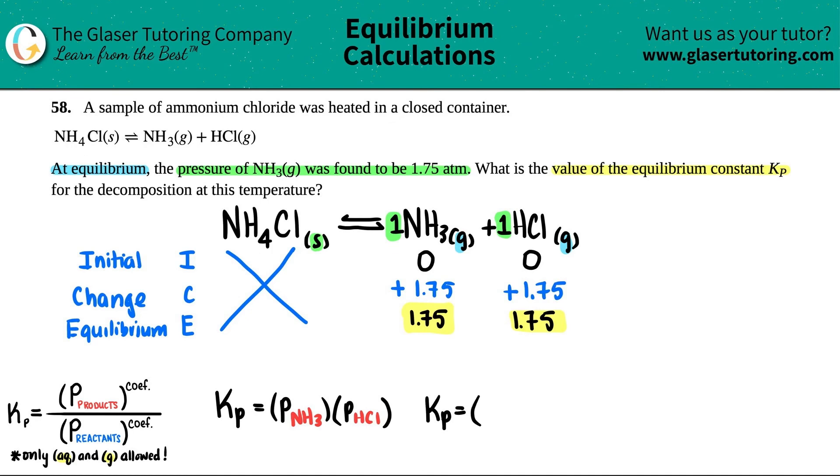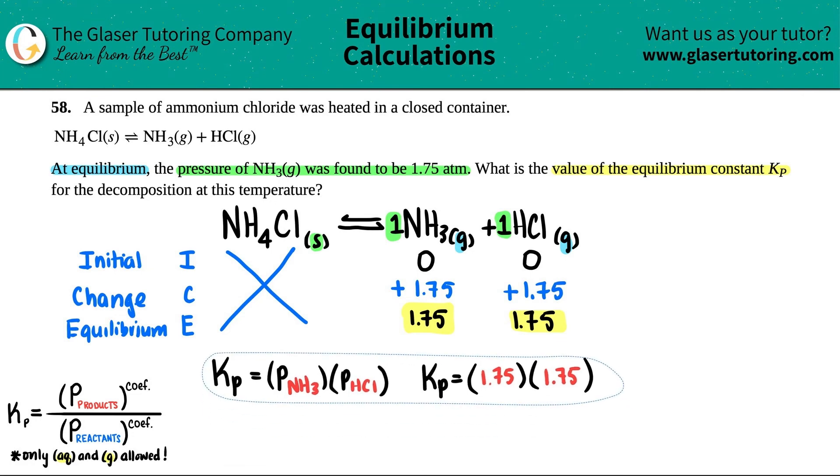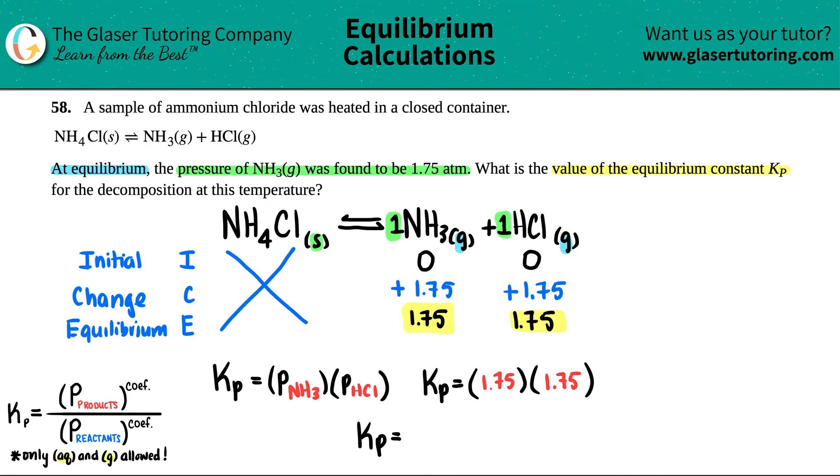Kp equals 1.75 times 1.75, or 1.75 squared. I got three sig figs, so if we really care about sig figs, which nobody cares, but just to go back, you should have three sig figs: 3.06. That is your final answer. Kp and Kc values are unitless, they have no units. You just use it as a number and that's the end.